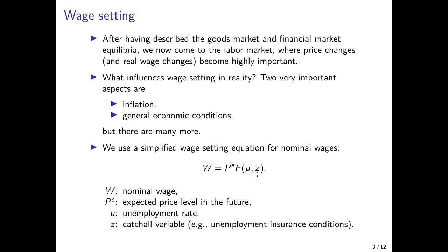We also have a catch-all variable Z that we define such that everything that increases Z increases wage bargaining power and therefore the nominal wage. That could, for example, capture unemployment benefits — if unemployment benefits are more generous, my bargaining position is better because my outside option is better. It also refers to various labor market regulations that increase the bargaining power of workers.